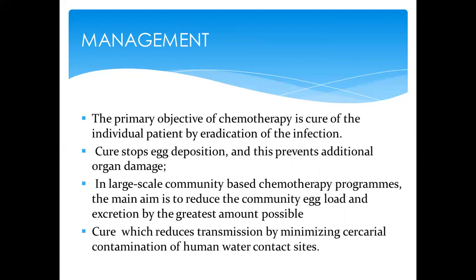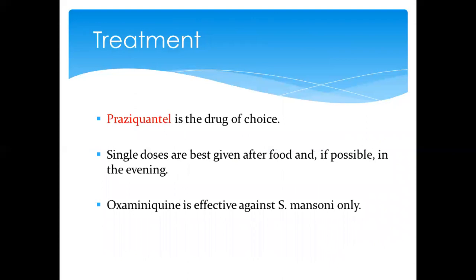For diagnosis, the definitive diagnostic criteria is microscopic examination of eggs found in urine or stool, identifying the morphological shapes — the lateral spine of mansoni versus the terminal spine of haematobium. For management, the approach is chemotherapy with drugs, with the main goal being to stop egg deposition in the different organs — whether the bladder, intestines, or rectum — and to reduce the overall egg load through community-based chemotherapy.